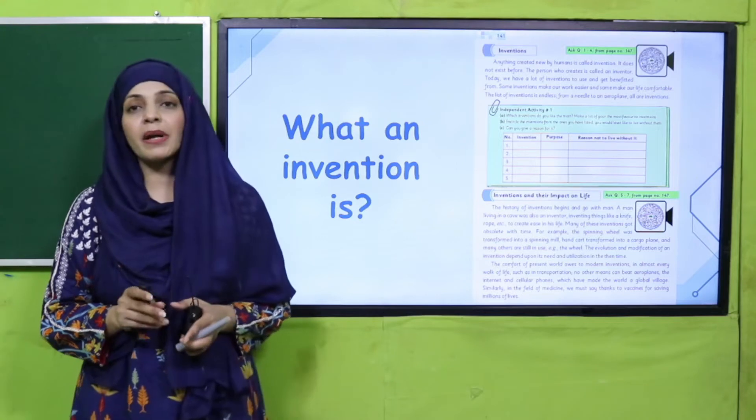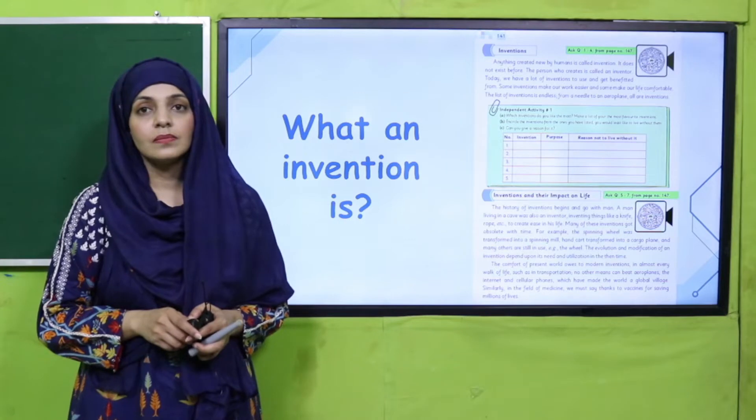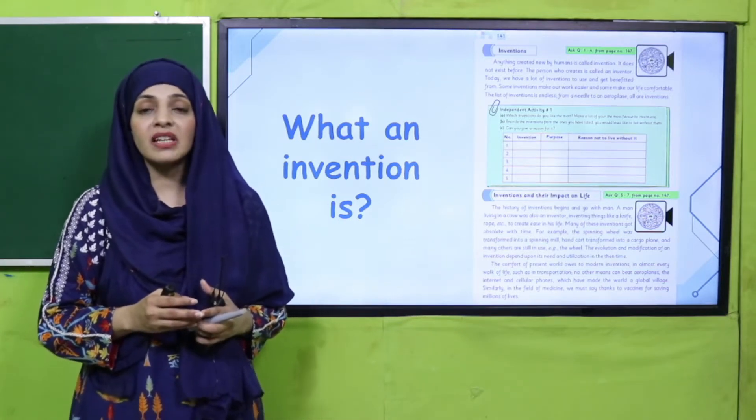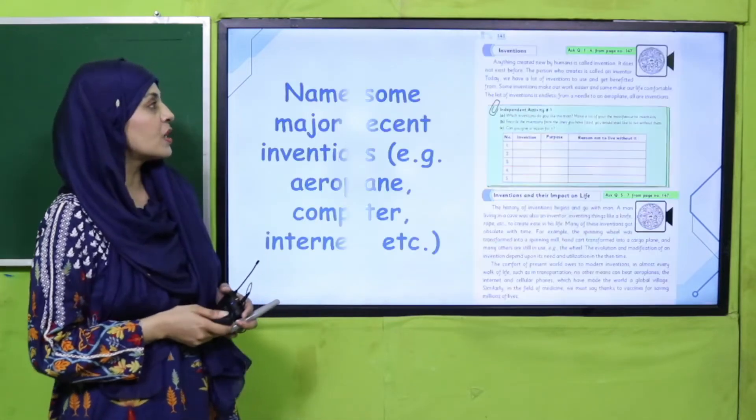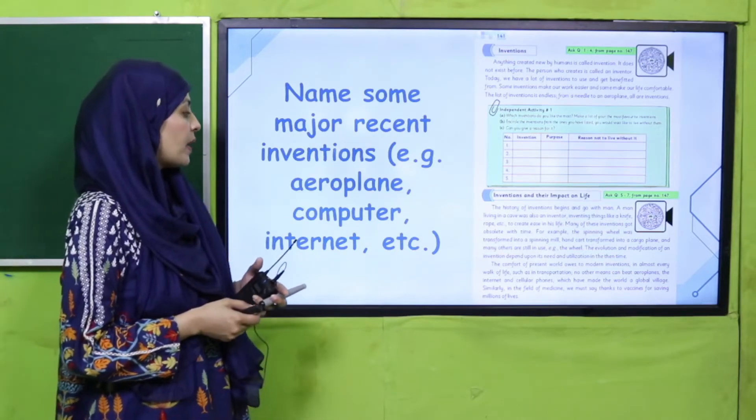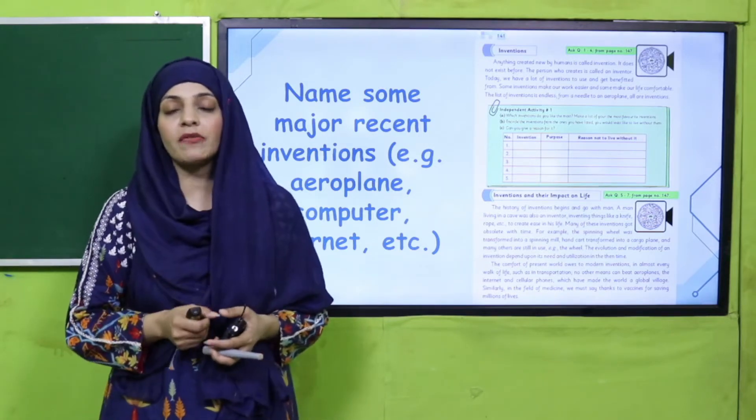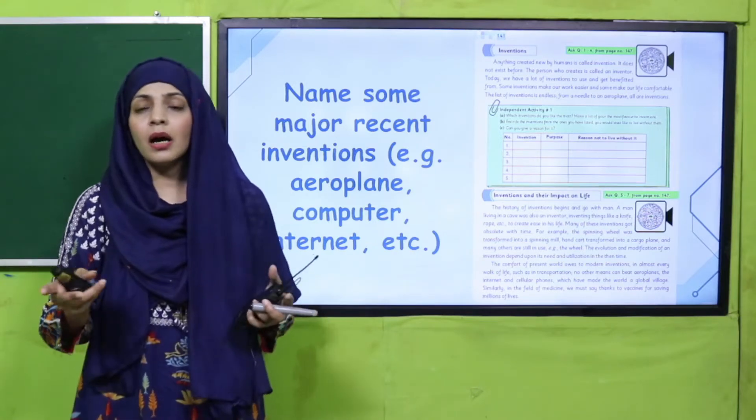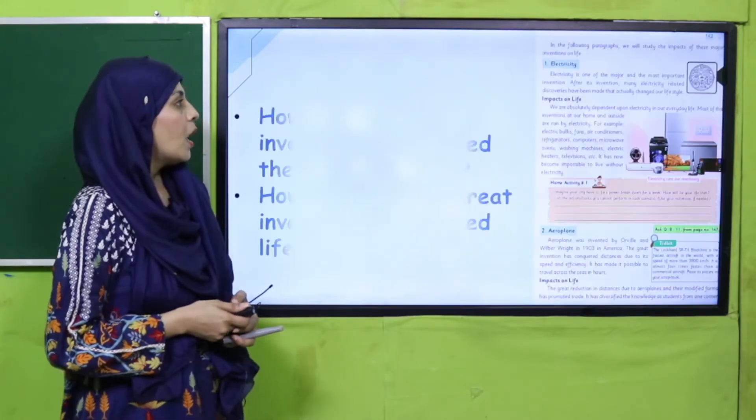My dear students, so sub se pehle hum ne invention ke baare mein padha ke basically invention kya hoti. So quickly tell me what is an invention. Okay, kisi bhi nayi cheez ko banana usko hum invention kehte. And what is an inventor? Who is an inventor? Who makes that thing, very good. Okay my dear students, then we discussed about different inventions. Name some major recent inventions, for example aeroplane, computer, internet, etc. So these all are some inventions. Aap in ke ilawa kuch aur inventions ke naam mujhe bata sakte hain - mobile phones, electricity, AC, microwave oven, washing machines. These all are some very major inventions.